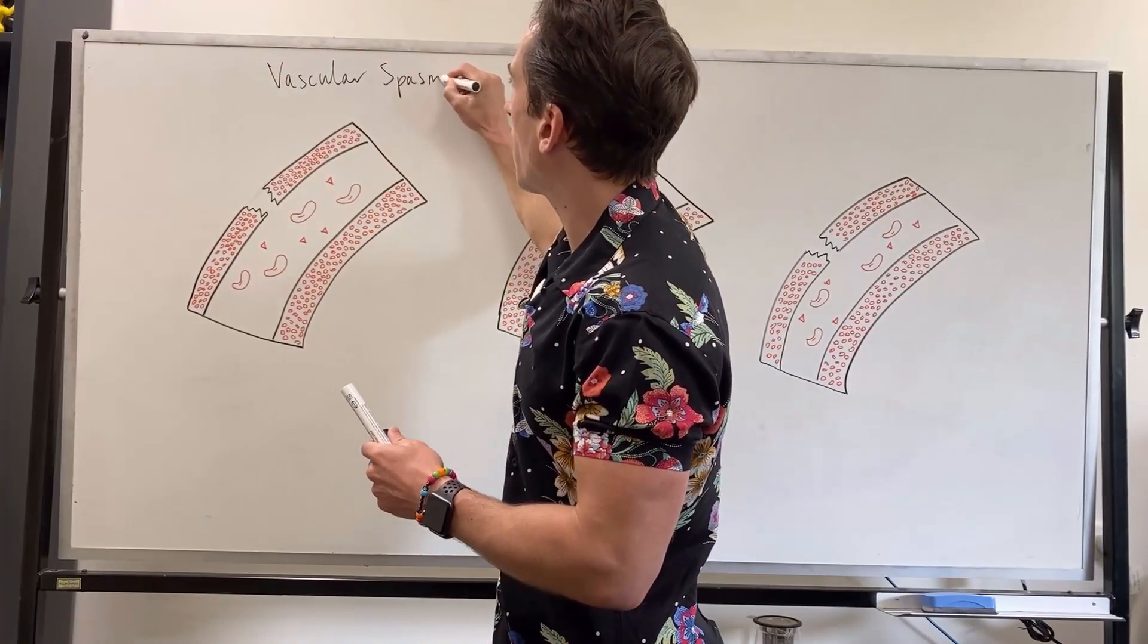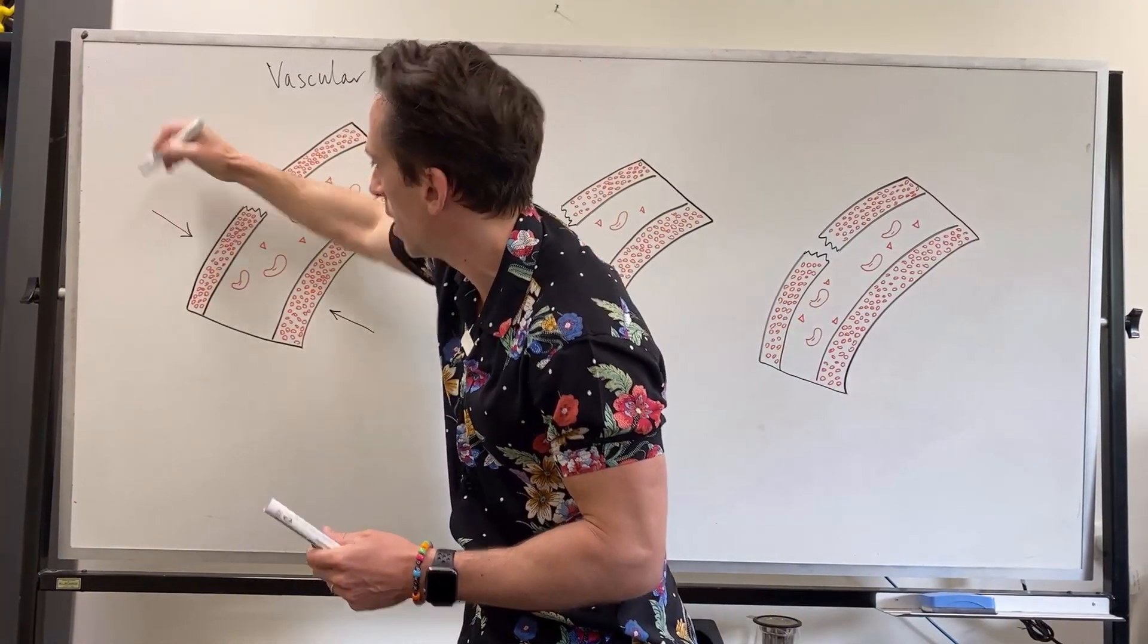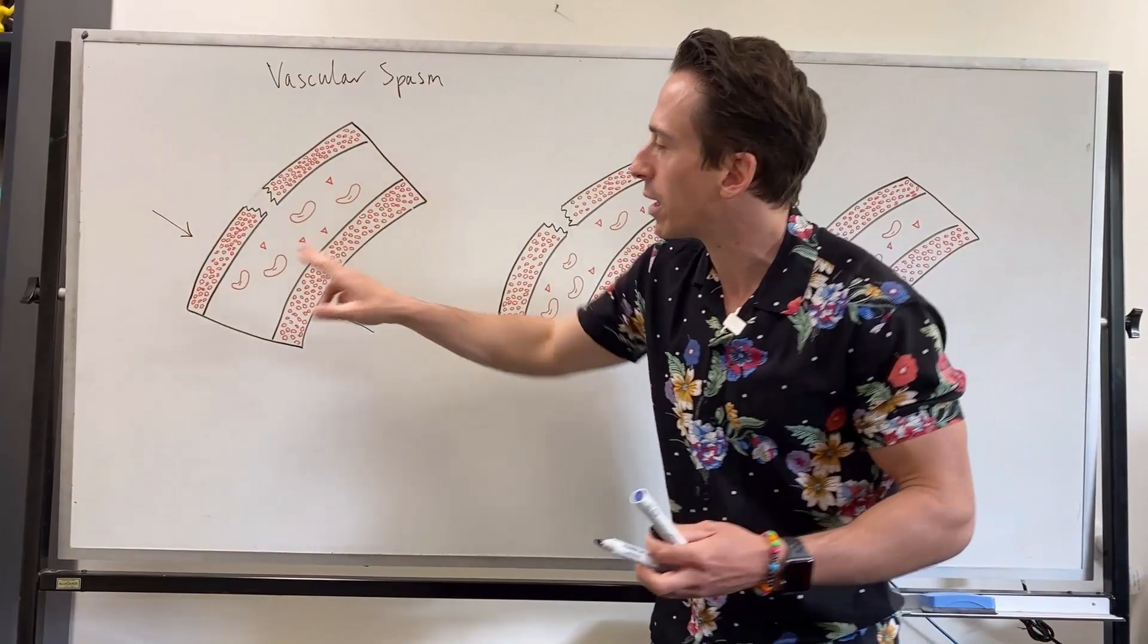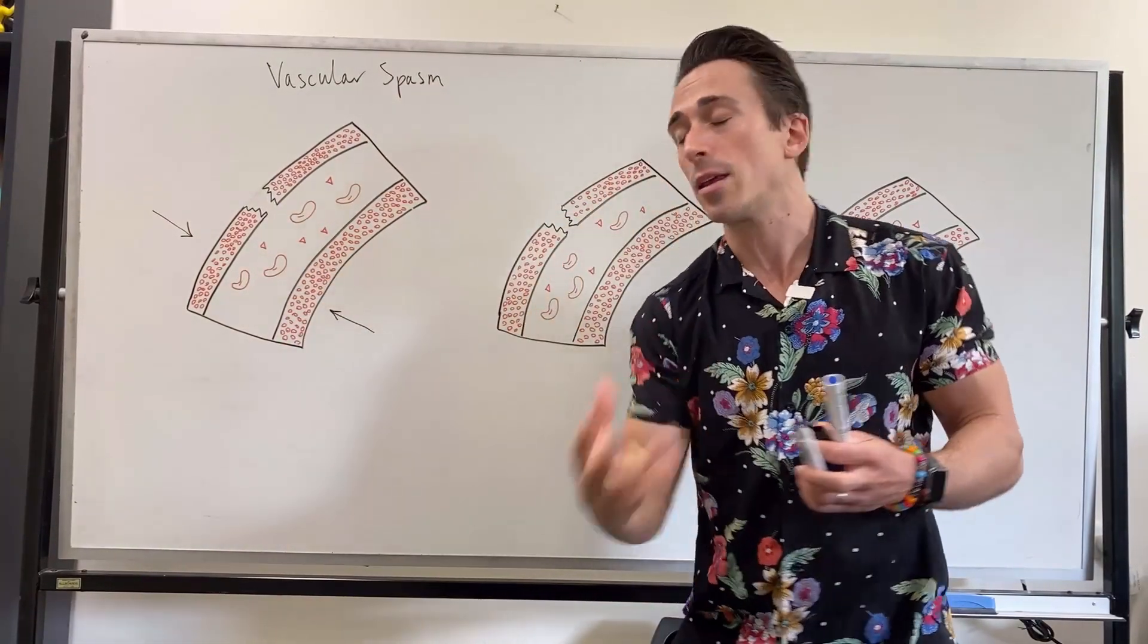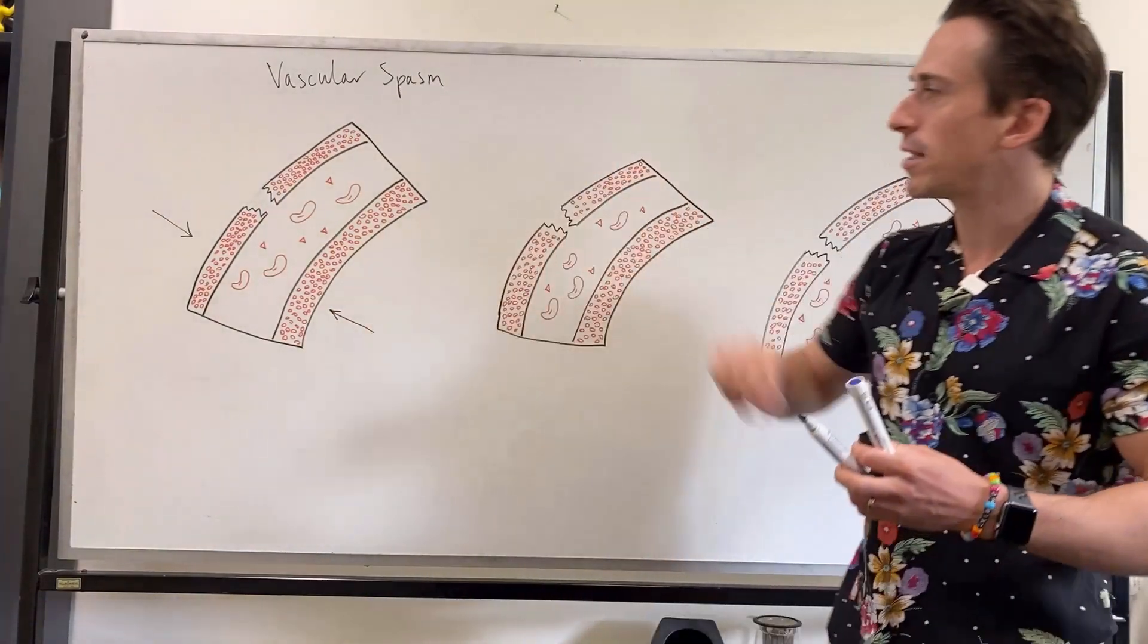Now why do we have a vascular spasm? Why do we want the smooth muscle in the blood vessel wall to constrict? It's because it's going to limit the amount of blood going through, therefore limiting the amount of blood that may be lost from that damage in the wall. So that's the first step.